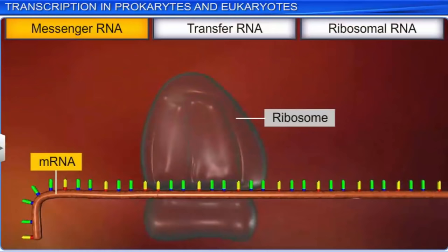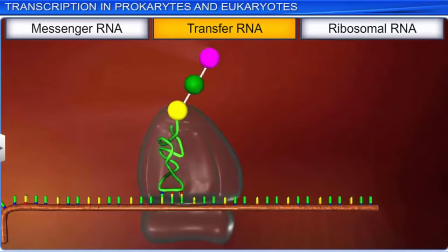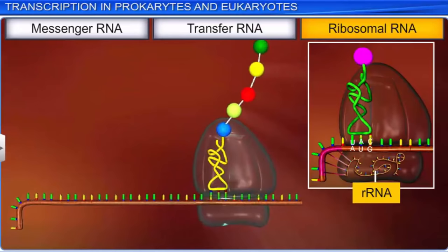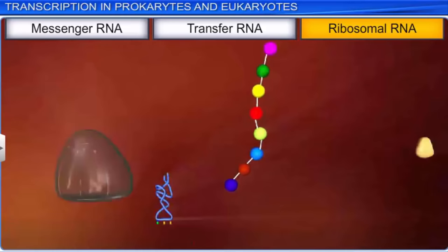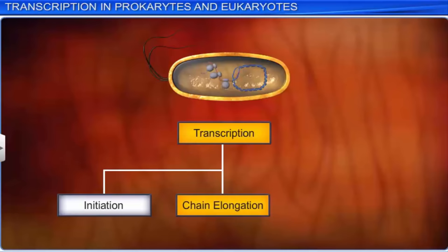The mRNA carries the coding information to the sites of protein synthesis and helps put together amino acids to make protein. The tRNA carries each amino acid to the ribosome according to the coded message in the mRNA. While the rRNA provides a mechanism to decode mRNA into amino acids. Transcription, the first process in protein synthesis, occurs in three stages: initiation, chain elongation, and termination.